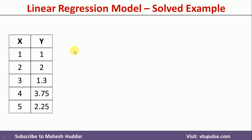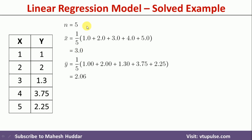This is the data set given to us. First, we will try to find the mean of x. The mean of x is equivalent to the addition of all values divided by 5 — that is 1 plus 2 plus 3 plus 4 plus 5, divided by 5 — which is equivalent to 3. The mean of y is equivalent to the addition of all y values divided by 5, which is equivalent to 2.06.